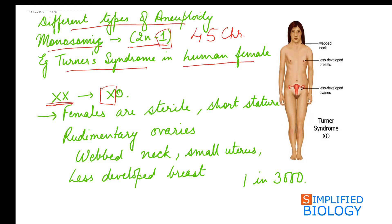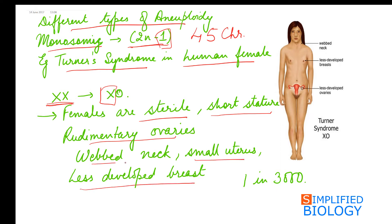Females with Turner syndrome are sterile. They have short stature, rudimentary ovaries, small uterus, less developed breasts, and a webbed neck. This condition is seen in approximately 1 in 3,000 females.